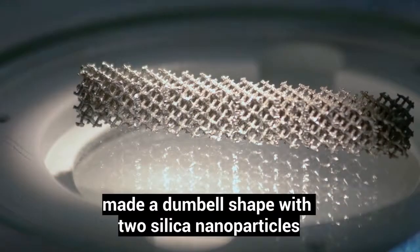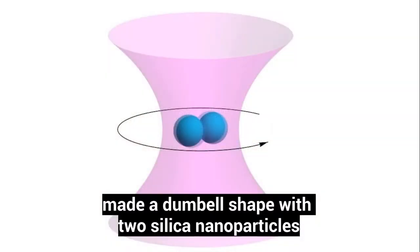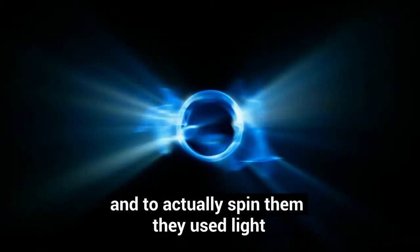You see, scientists at the Purdue University made a dumbbell shape with two silicon nanoparticles. And to actually spin them, they used light.